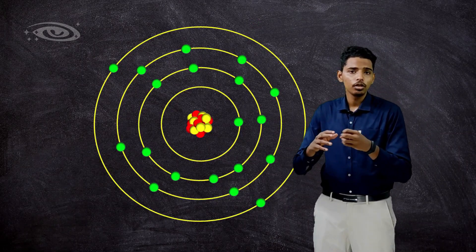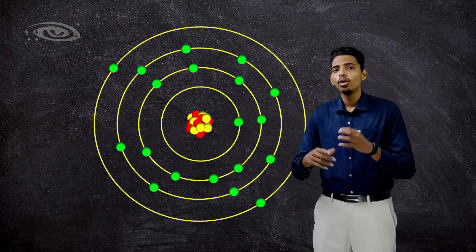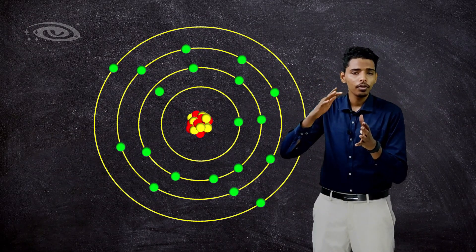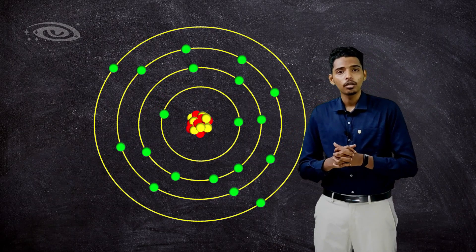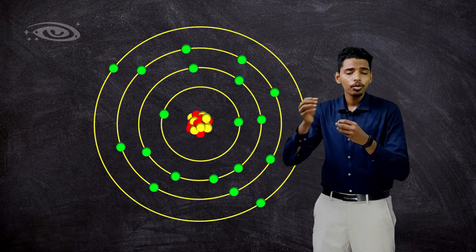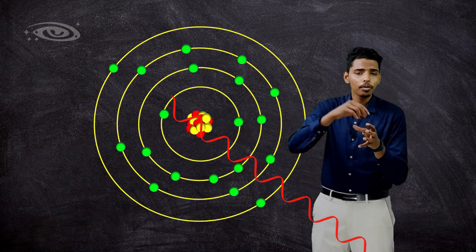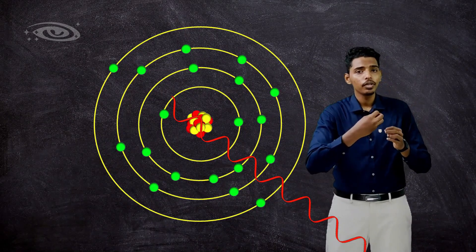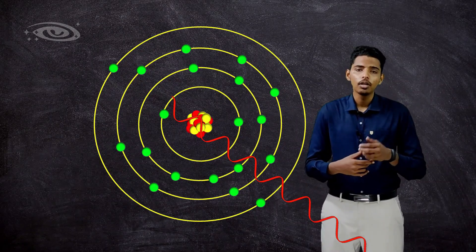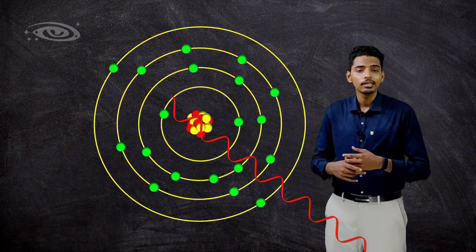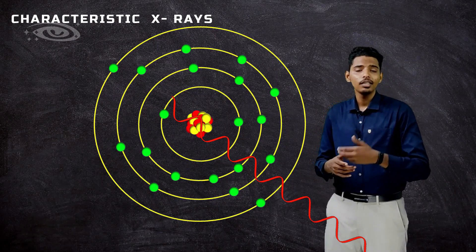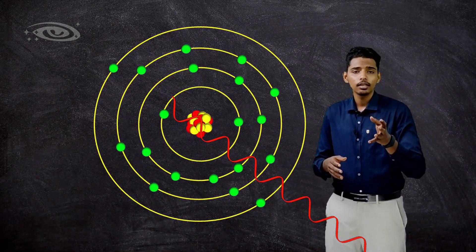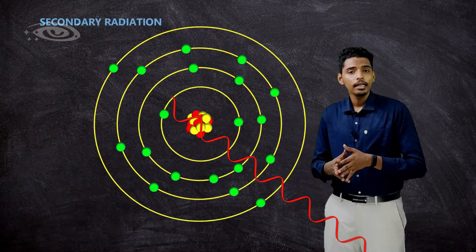The atom is now unstable because it has lost one electron. To become stable, an outer-shell electron drops into the vacant K-shell position. During that process, the outer electron accelerates as it drops down, releasing energy in the form of X-radiation. We call this X-radiation characteristic X-rays, which act as scattered radiation and are also referred to as secondary radiation.